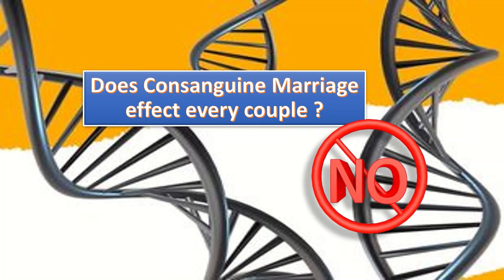Does consanguineous marriage affect every couple? The answer is no — not every consanguineous marriage results in genetic problems. For every genetic disorder, we cannot blame consanguineous marriage. However, if there is a prevailing genetic disorder in a family, which in most cases remains undiagnosed due to insufficient healthcare, there are high chances of abnormalities in the newborn. Therefore, since most genetic disorders go undiagnosed, cousin marriages should generally be avoided and discouraged.